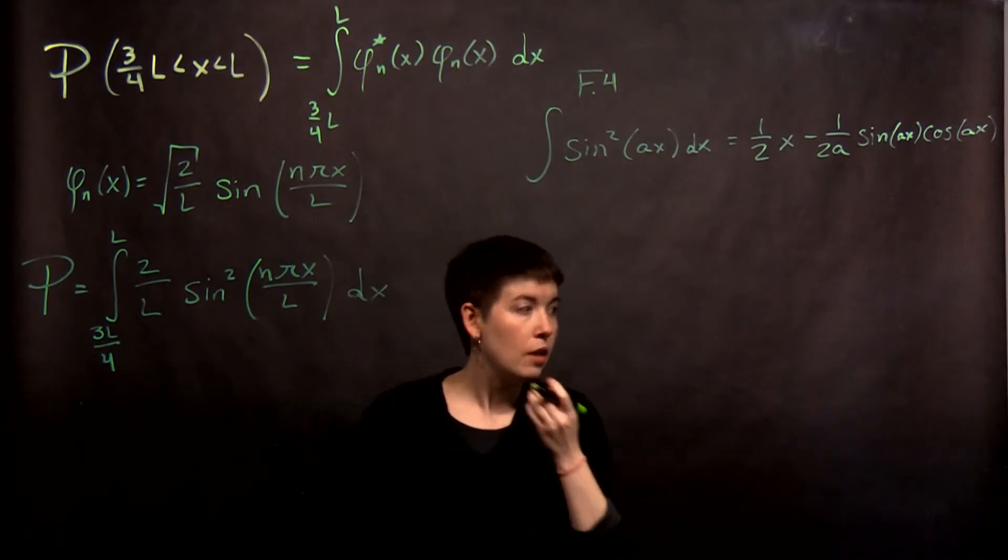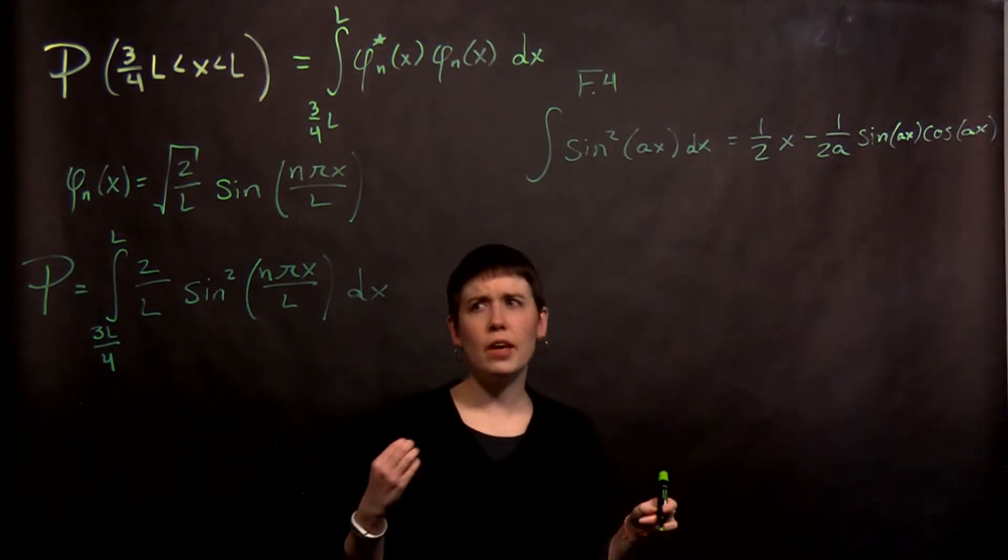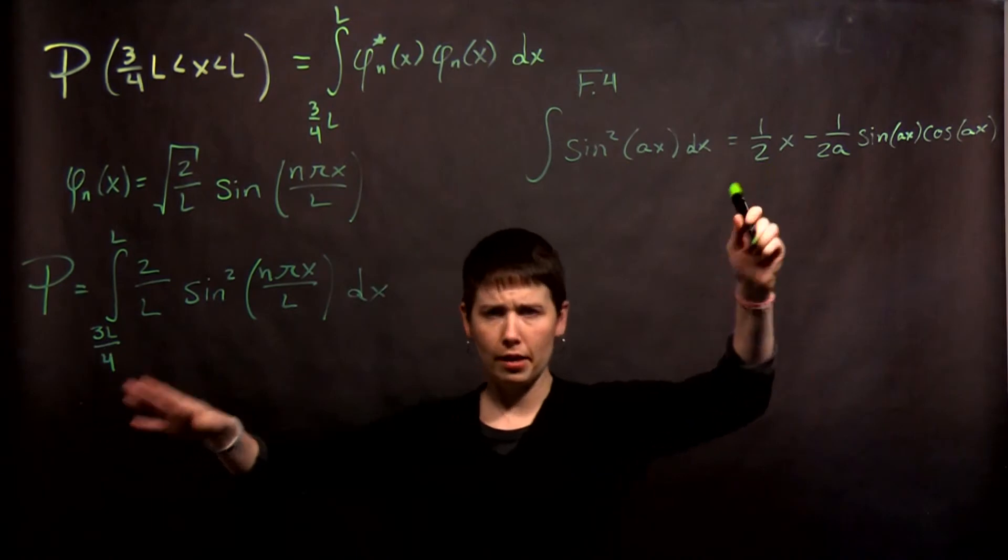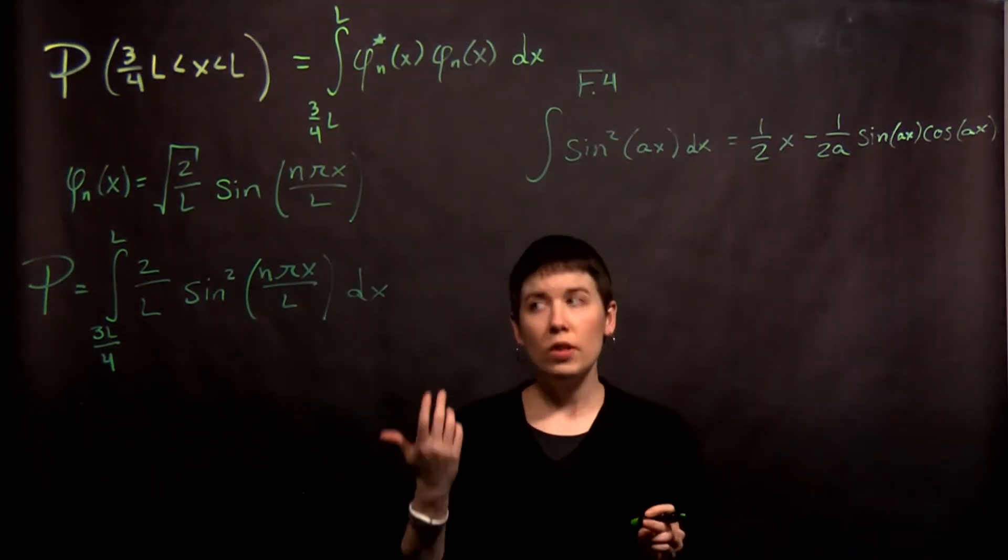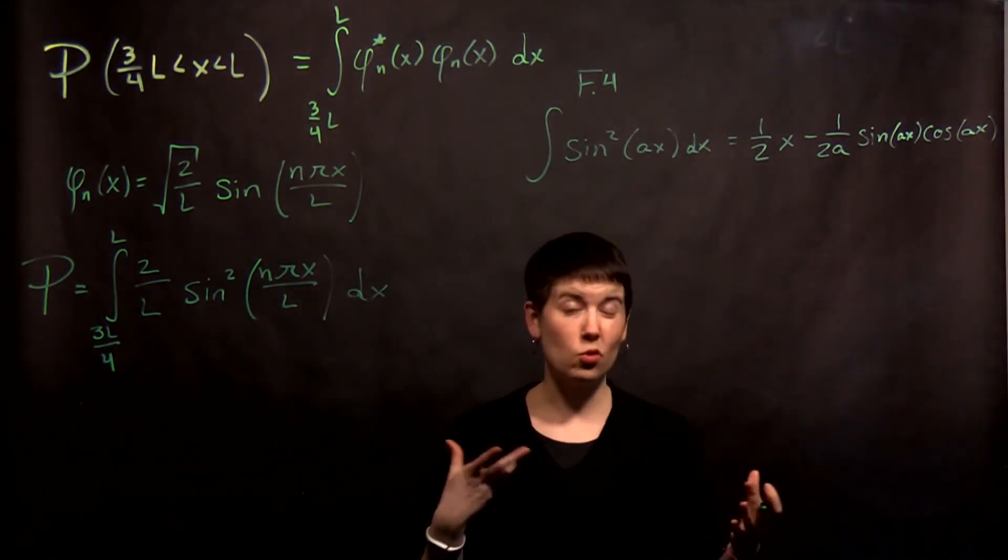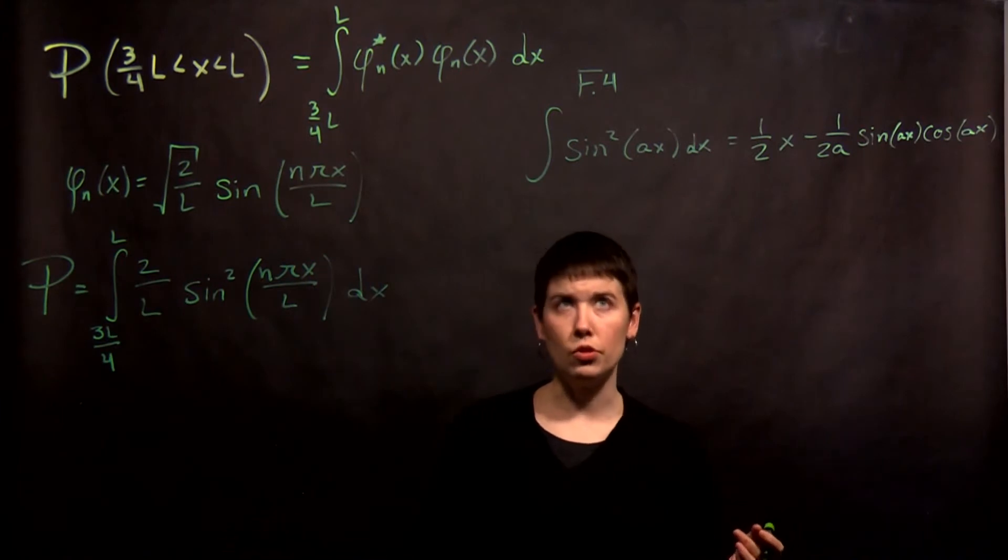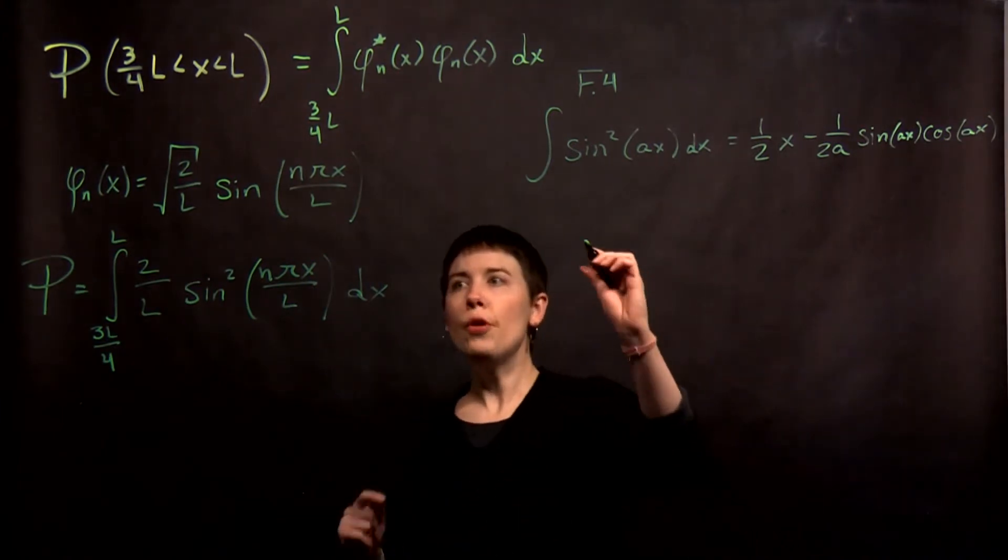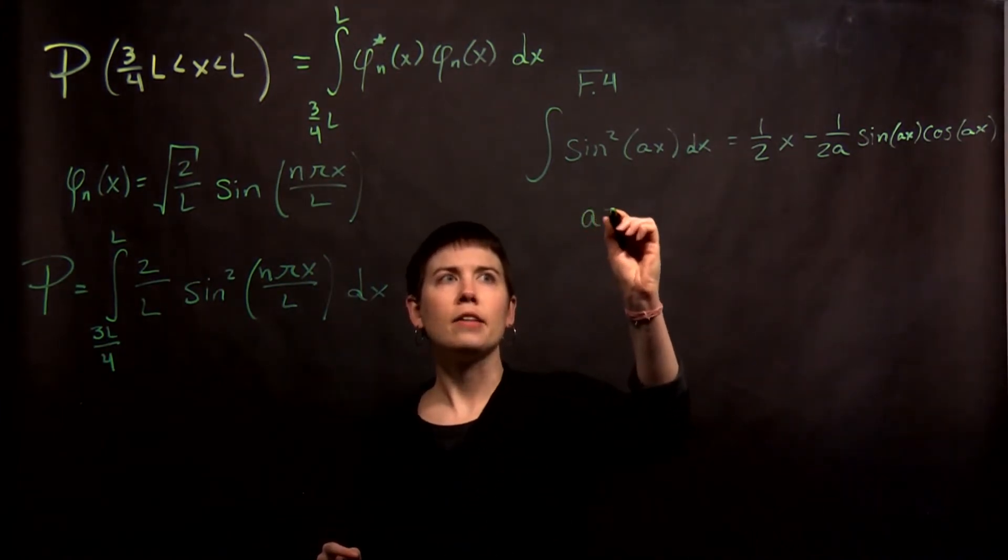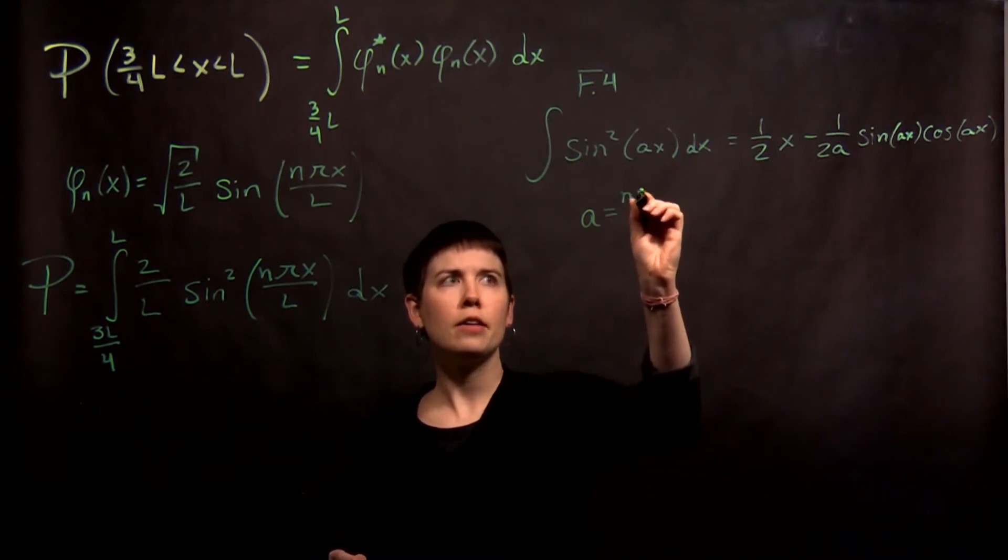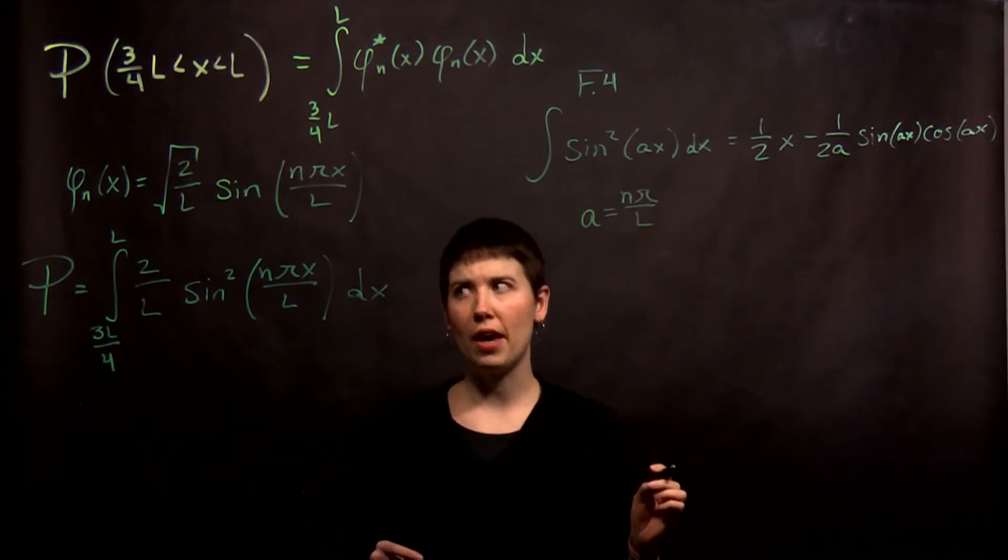Okay. Now you might say, well, how is that helpful? This has bounds. What is x? Go with this. One thing we need to do is sometimes it's a little bit tricky to figure out what integral you can use. But this is it. So notice that we're going to set a to be equal to n pi over l. Don't forget that.